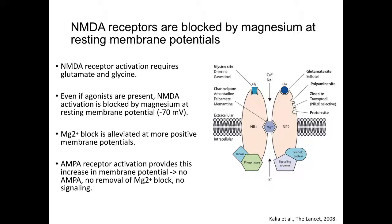To answer this question, we'll examine the NMDA receptor. The NMDA receptor requires two agonists: glutamate and the coagonist glycine. However, even if both agonists are present, the channel will not open because of a magnesium block in the pore that occurs when the cell is at resting membrane potential, which is hyperpolarized at minus 70 millivolts. The only way the magnesium block is alleviated is to raise the membrane potential to more positive potentials, which is usually provided by AMPA receptor activation.